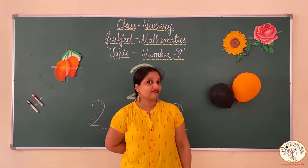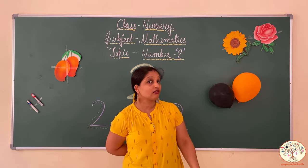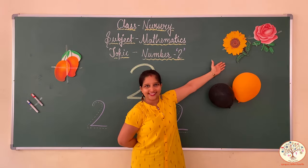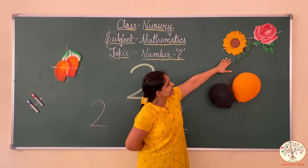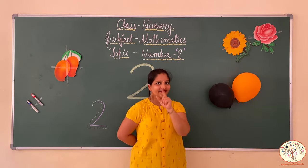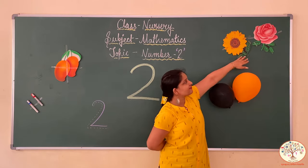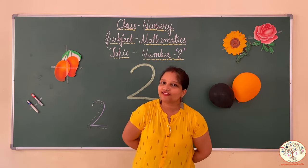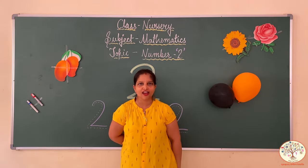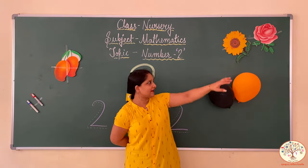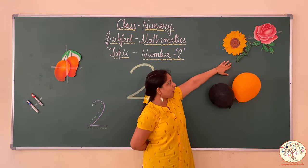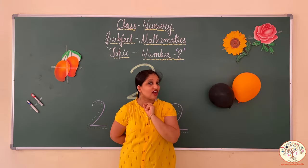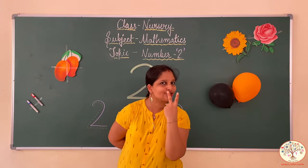Now I have got something very beautiful and colorful. See, what are these? These are flowers. And how many flowers? Let's count: 1, 2. How many flowers? 2 flowers.